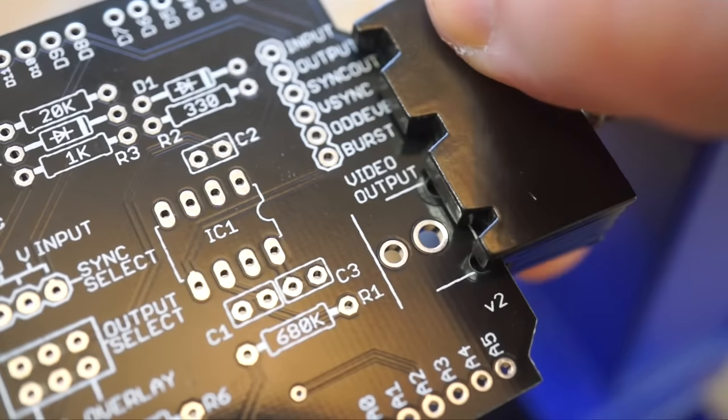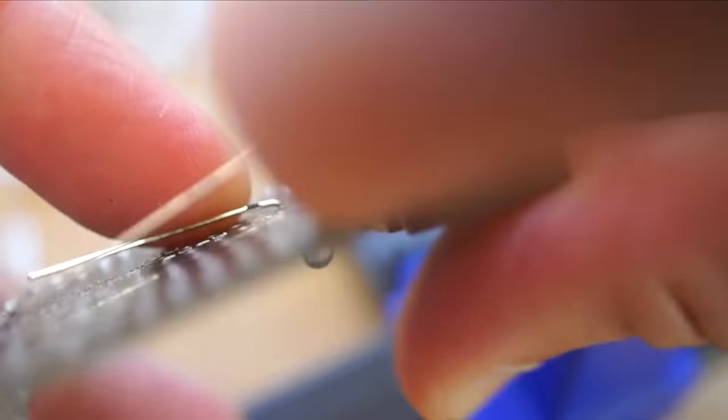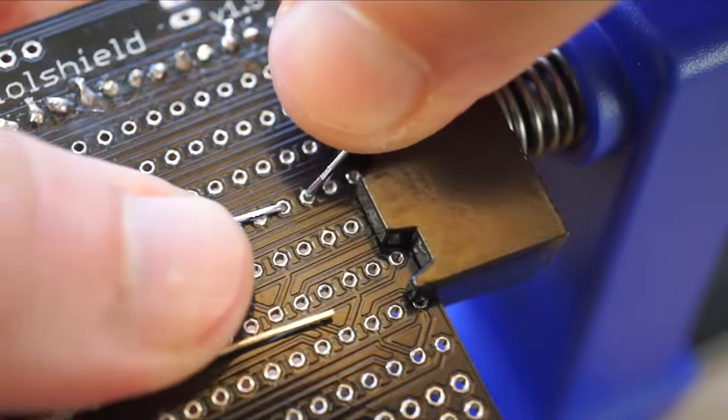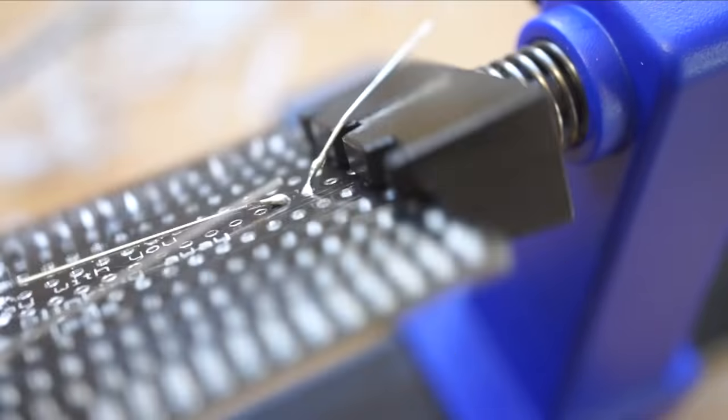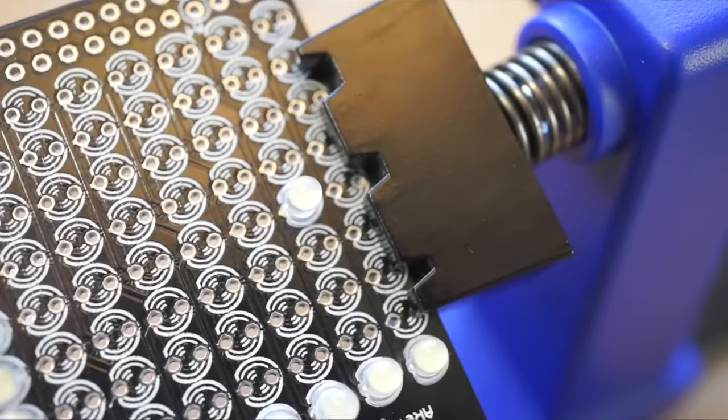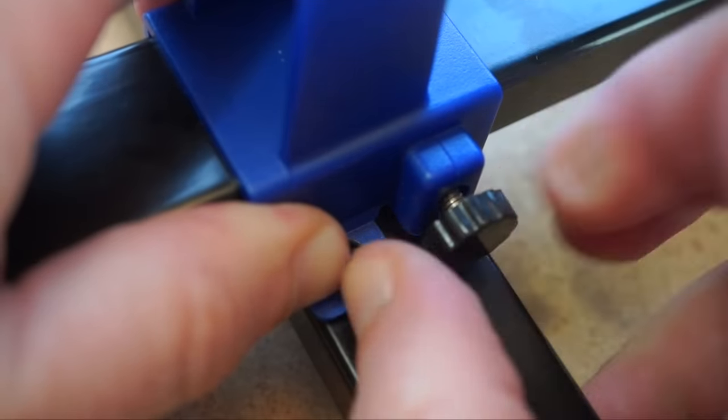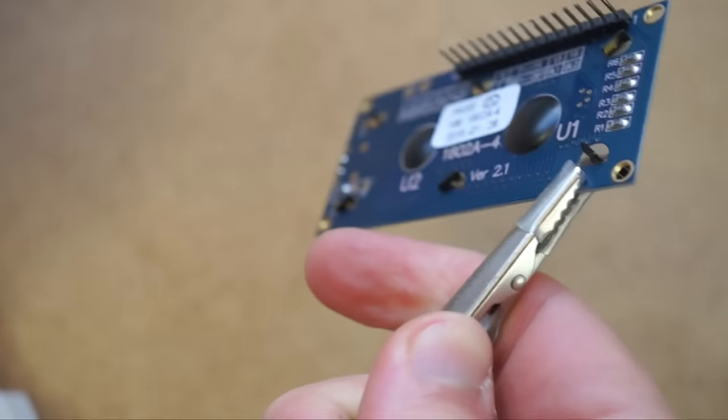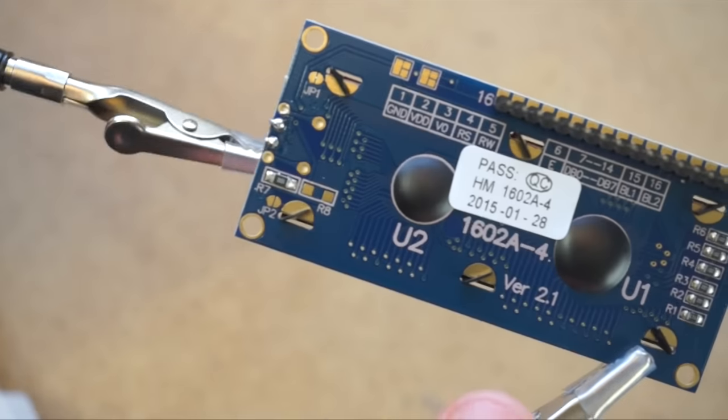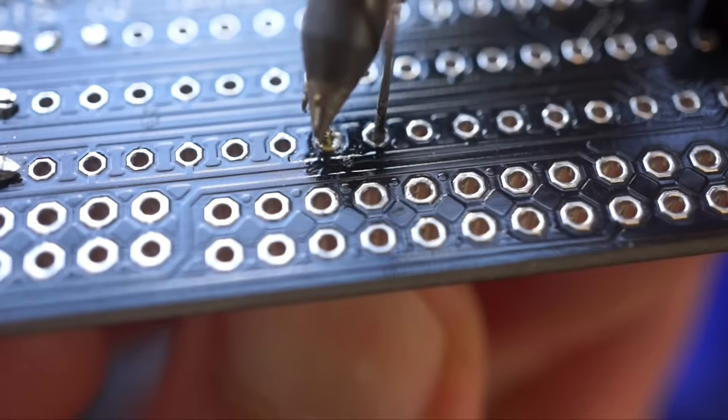This is great when you need to drop in a component from the front, bend the leads, flip it over to solder it up, and then flip it back for the next component. With this, it's easy. There are thumb screws to tension everything up just the way you want, and it sure beats working off the table, and it's more rigid than a flexible arm clip.